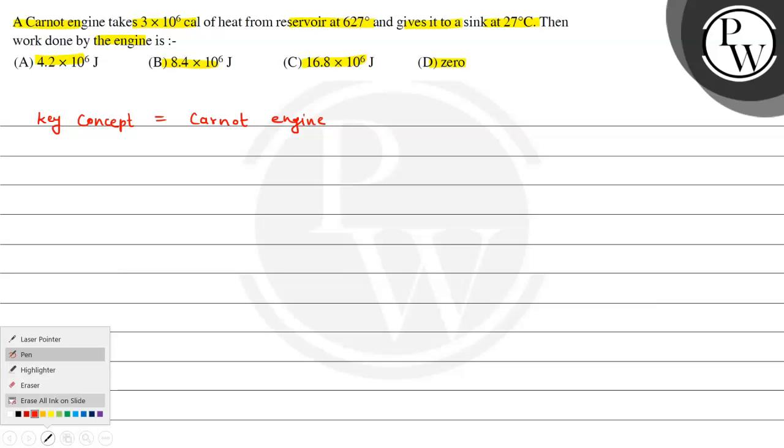To find work done, we know that efficiency η equals work done by the engine divided by Q, where Q is the heat taken from the higher temperature source.